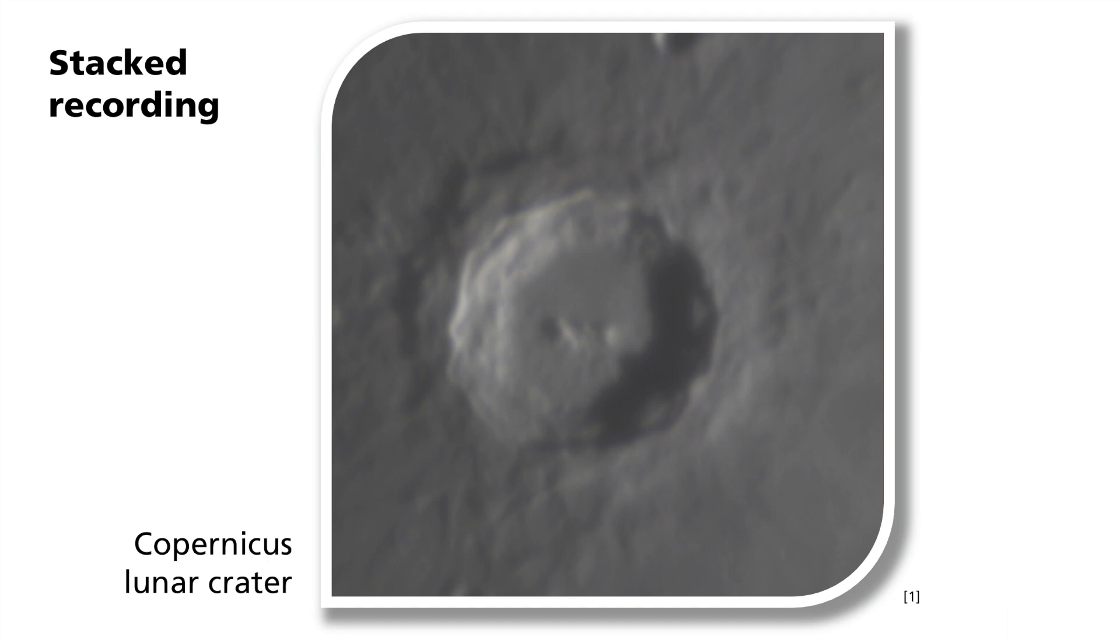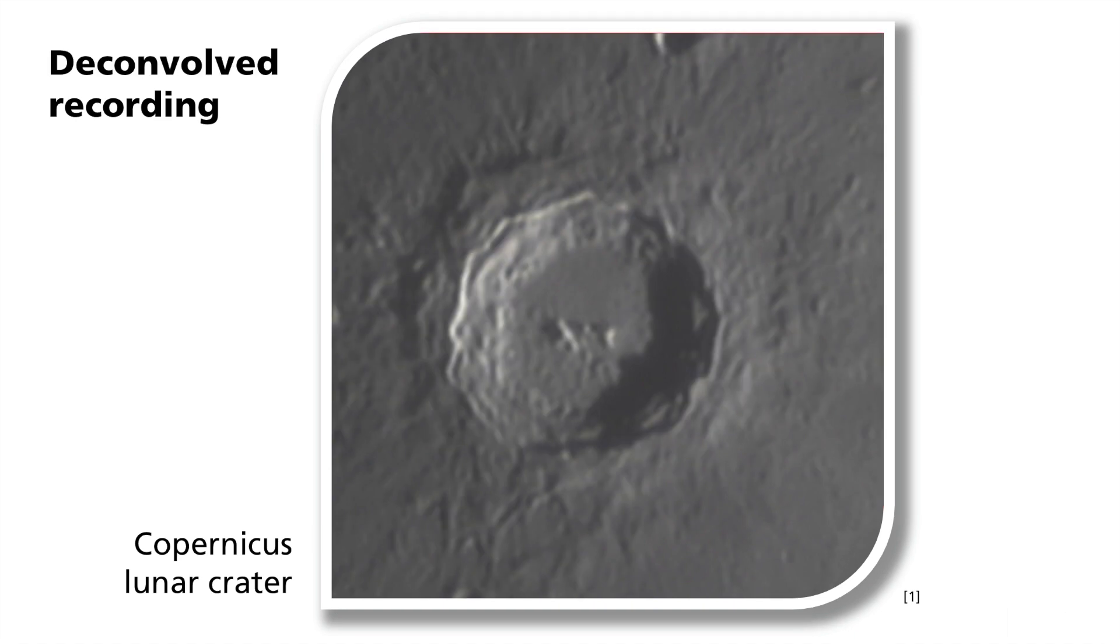You can clearly see the structures within the crater. However, the structures do appear somewhat blurred. The reason for this are atmospheric disturbances that scatter the light on its way to the telescope. If these effects can be removed from the image, it becomes sharper.